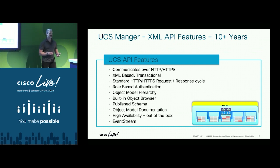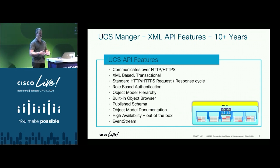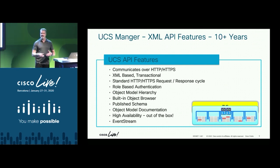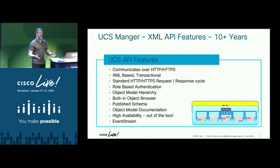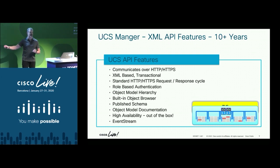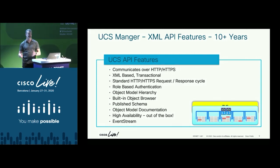UCS Manager is highly available out of the box. When two fabric interconnects are connected and at least one chassis or rack-mount server is discovered, it is highly available. It also has the event stream — a flow of XML that comes out of UCS Manager. That's how your client stays up to date. When you launch UCS Manager, the very first thing it does is subscribe to the event stream, which is how it knows when someone on the other side of the globe creates a service profile and it just pops up in your client.